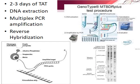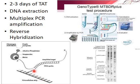The turnaround time of LPA is 2 to 3 days. There are three steps involved: first, DNA extraction; second, multiplex PCR amplification with biotinylated primers; and third, reverse hybridization. In this step, amplicons generated earlier are denatured into single-stranded amplicons. Membrane strips coated with specific probes are added, which bind to complementary sites of the amplified nucleic acid. Then streptavidin-conjugated alkaline phosphatase is added to detect hybrids of the biotin-streptavidin moieties, and finally analysis is done based on interpretation of the LPA strips.